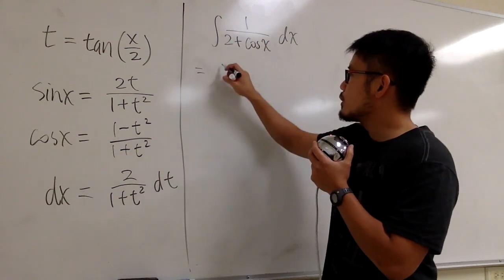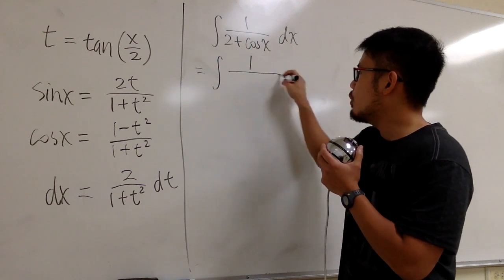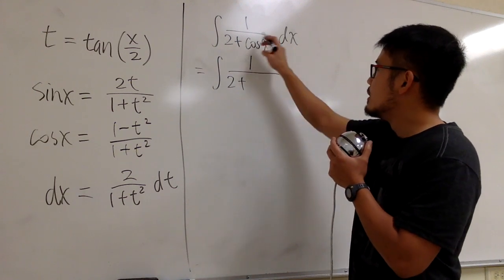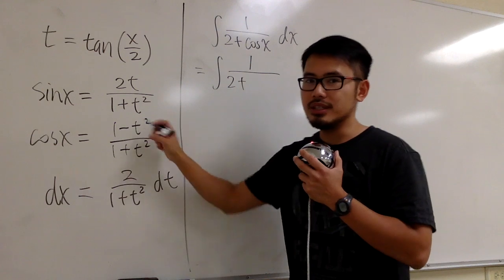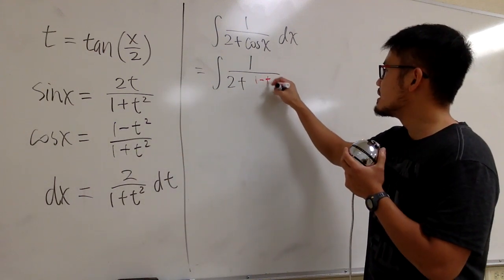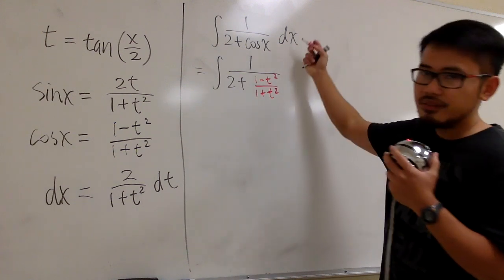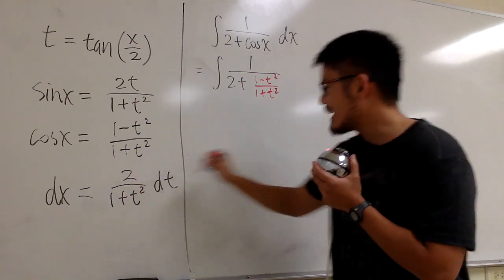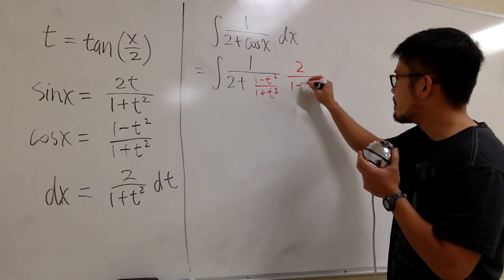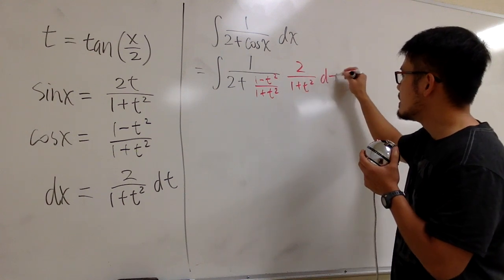This is the same as integral of 1 on the top over 2 plus, for cosine x, we are going to change into this: 1 minus t squared over 1 plus t squared. And then for the dx, we have all that, 2 over 1 plus t squared dt.